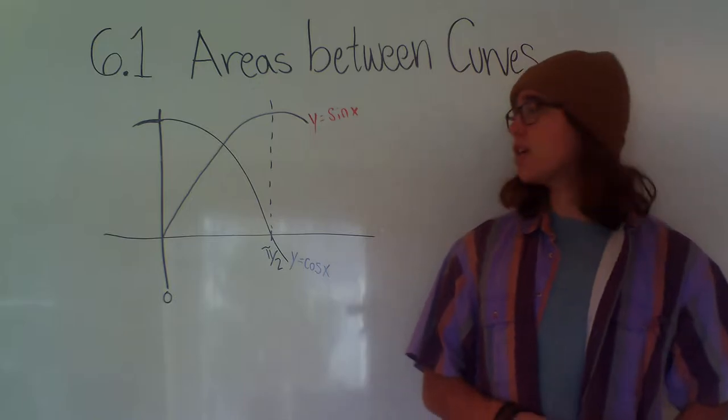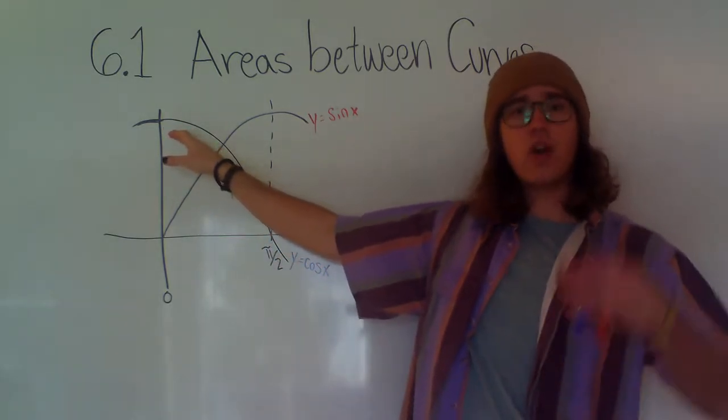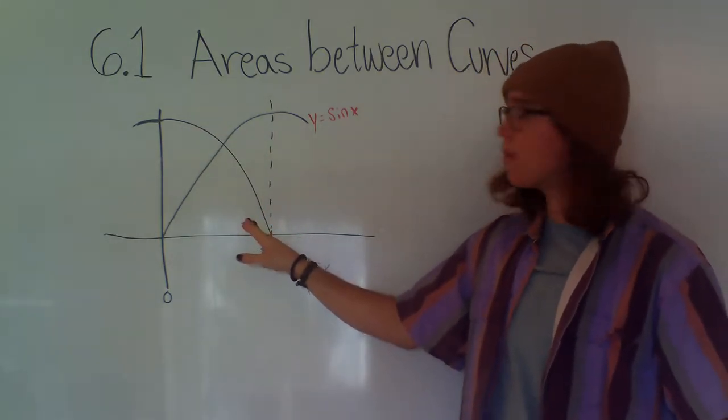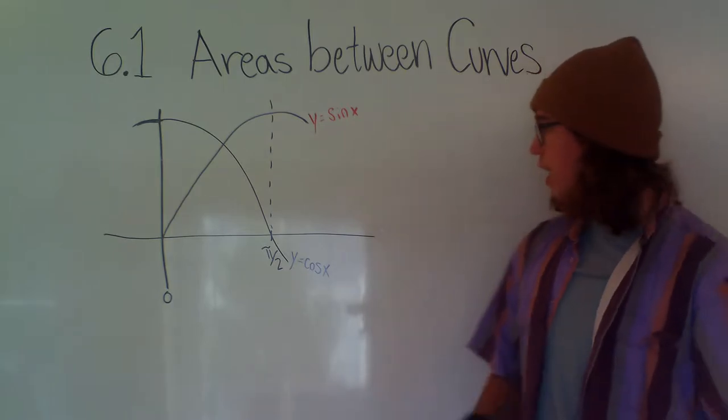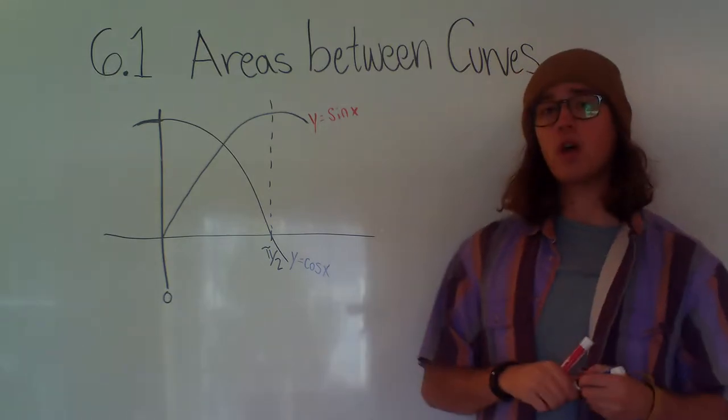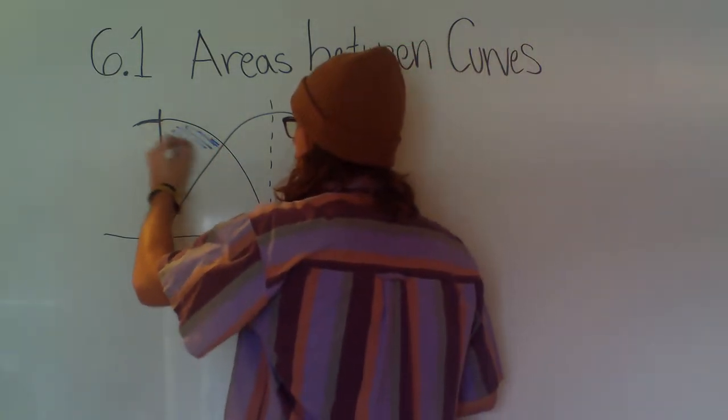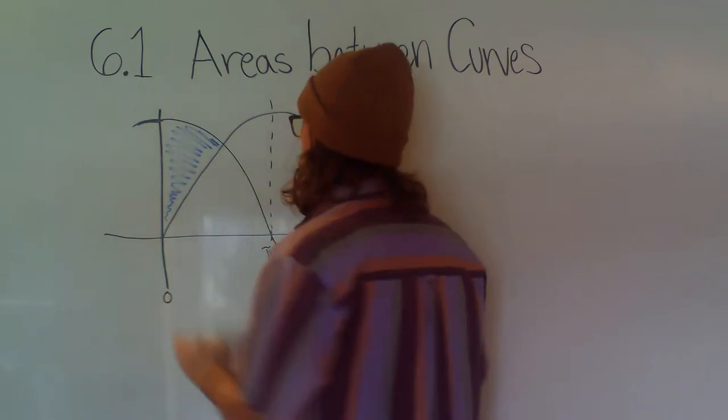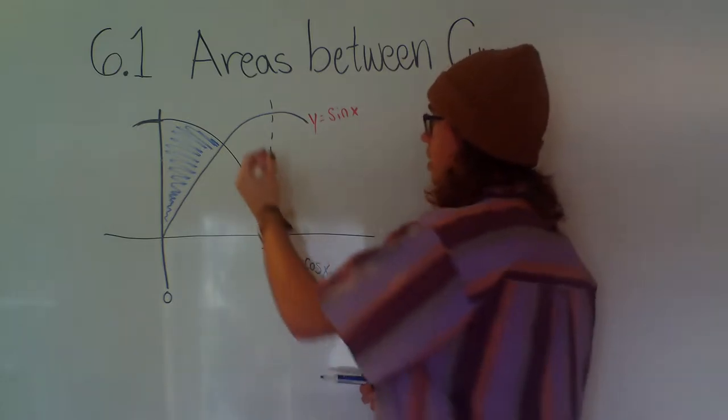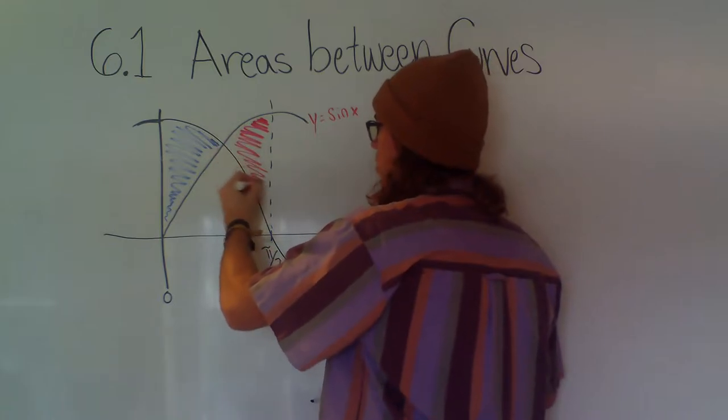What if we have an intersection of two curves such that one curve is the larger curve at the beginning, but then it becomes the lower curve later in the end? Here we have y equals cosine of x and y equals sine of x, and we want to find the area between the two curves. That would be this section where cosine is bigger, and then we have this red section where sine is bigger. And we're like, how do we find the area of these two?